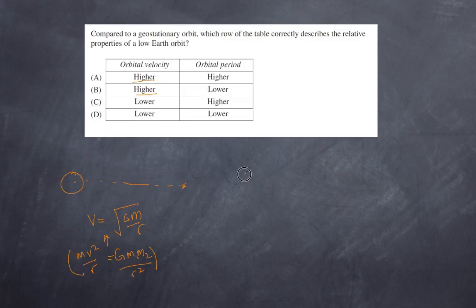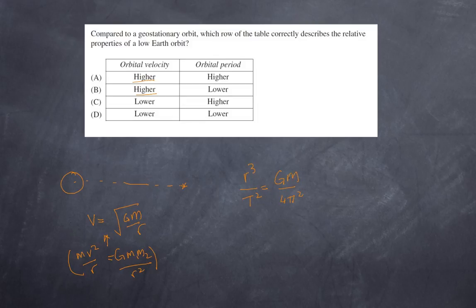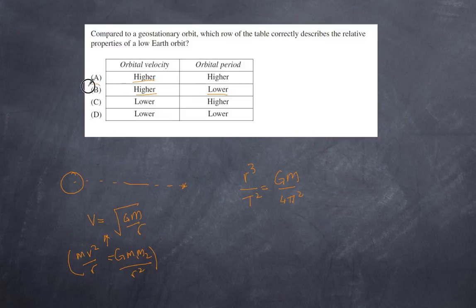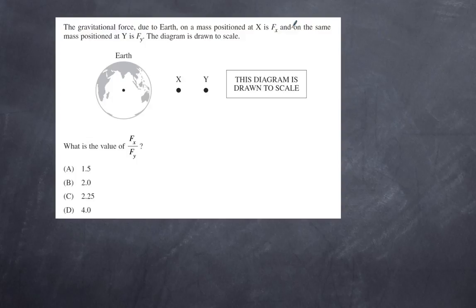For the orbital period, Kepler's third law states that r³/T² = GM/(4π²). This relationship is a constant for all objects around a central body of mass M. Increasing radius increases period; decreasing radius decreases period. So bringing a satellite to a lower Earth orbit means a shorter orbital period. Therefore the answer is B.